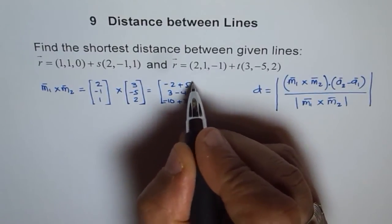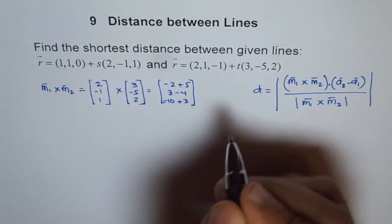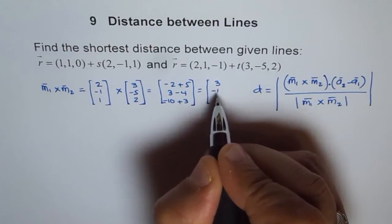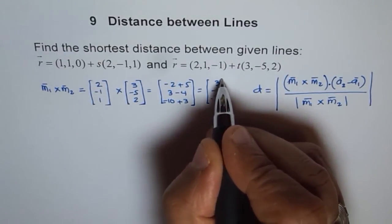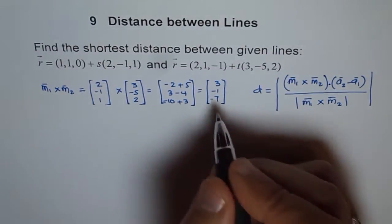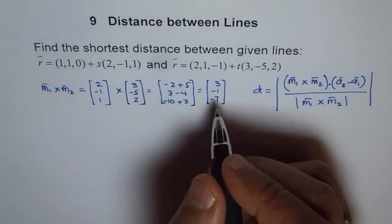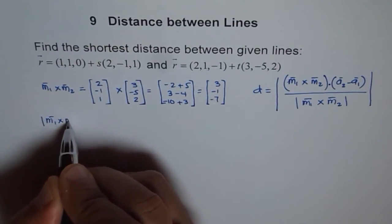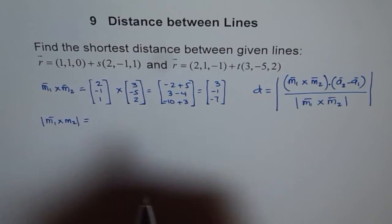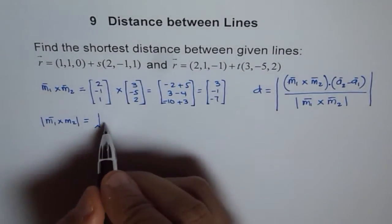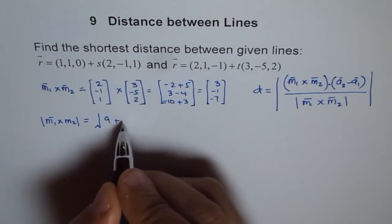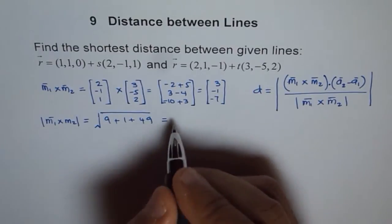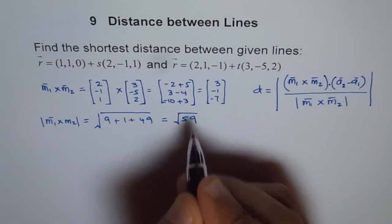So M1 cross M2 equals (3, minus 1, minus 7). The magnitude of M1 cross M2 is equal to the square root of 9 plus 1 plus 49, which equals the square root of 59.